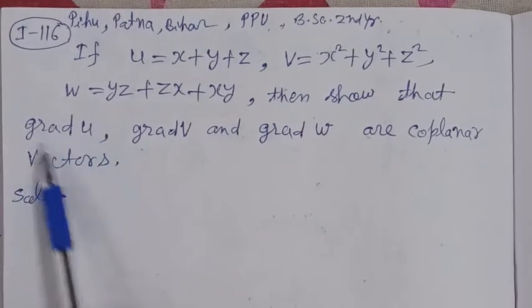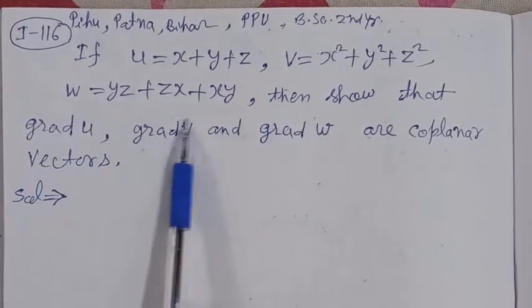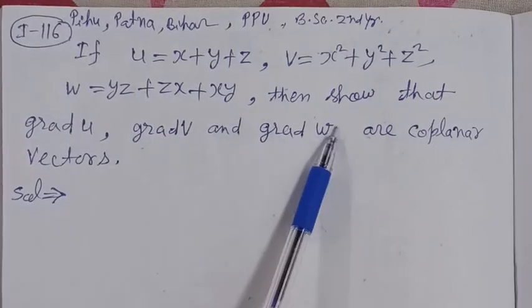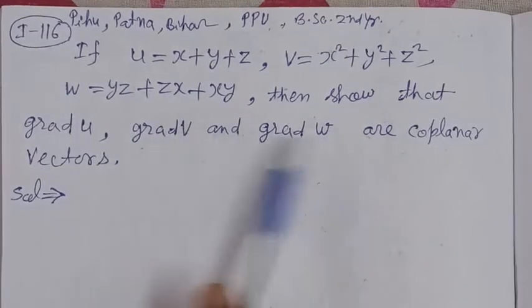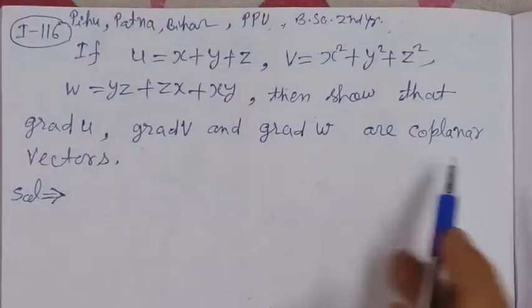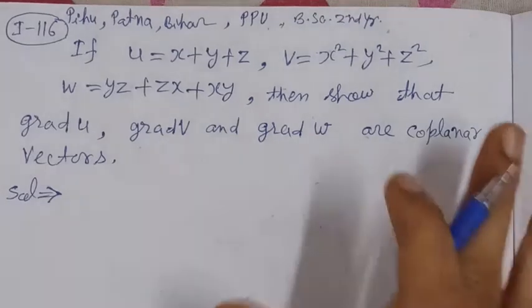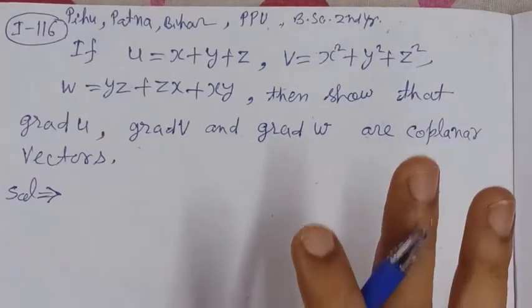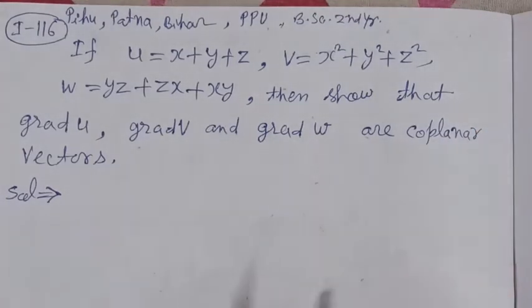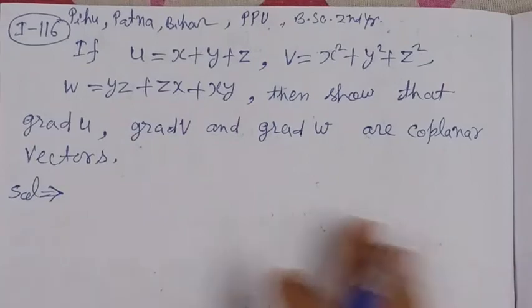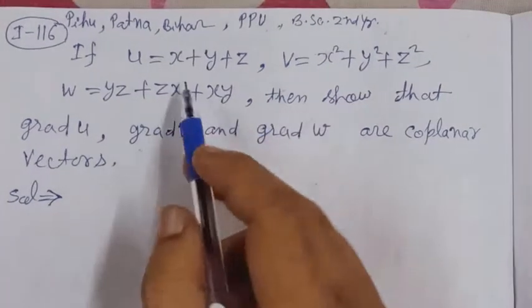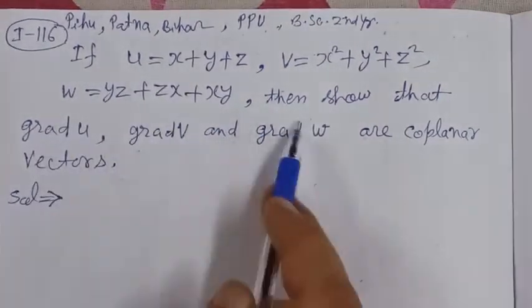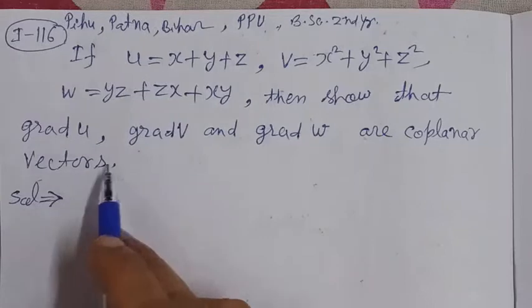Gradient of u, gradient of v, gradient of w — these three vectors, we need to show they are coplanar. What are coplanar vectors? We have provided a link in the description. To show three vectors are coplanar, we need to find the value of each gradient.